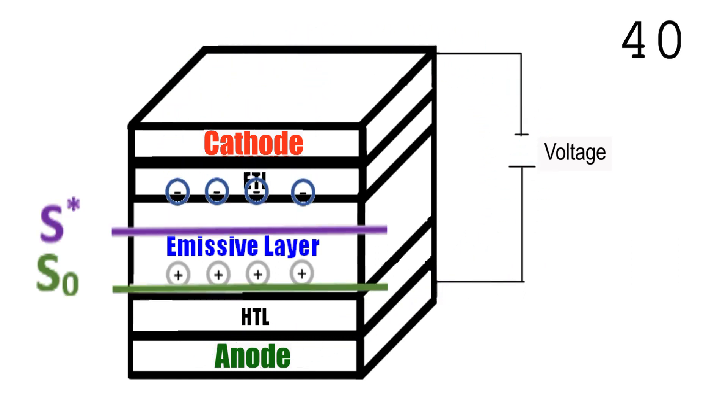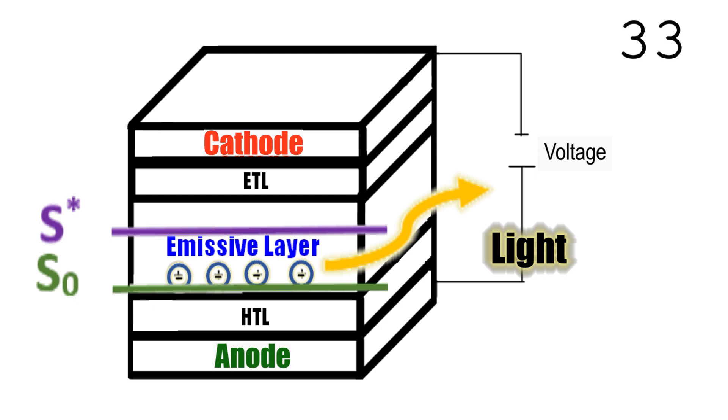When electrons are back to the emissive layer, they are in the excited state of the molecule with higher energy. When they return to the ground state with lower energy, they emit the difference in energy in the form of light. This is the light generated by OLED.